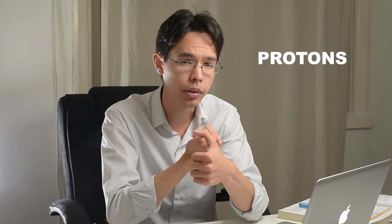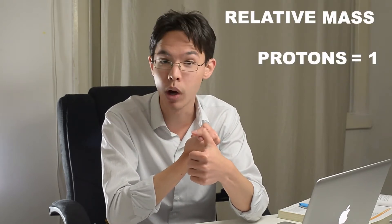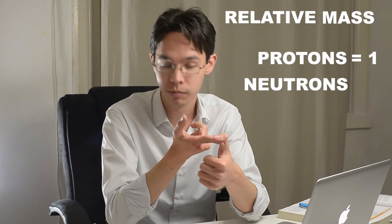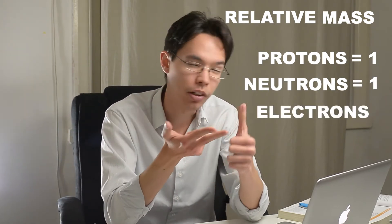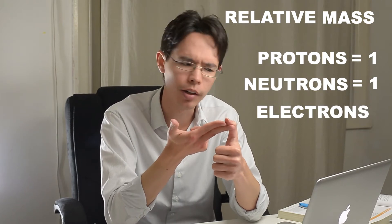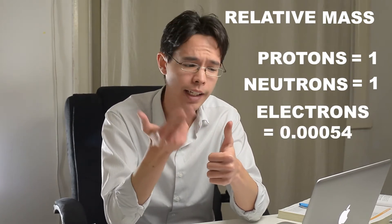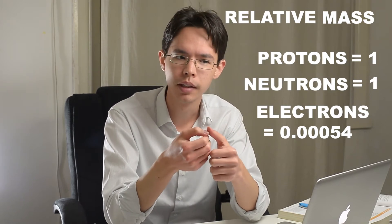For example, protons — we give them a relative mass of 1. Neutrons have the same value; we give them a relative mass of 1 as well. Now electrons are special because they are roughly 1840 times lighter than the other two. So if you added them all together, you would imagine it would practically have no difference at all to the overall mass. So we usually don't count the electrons at all — it's just a waste of time.